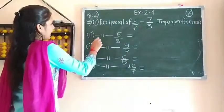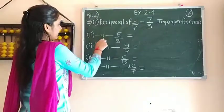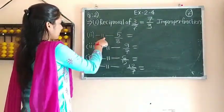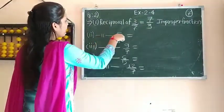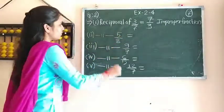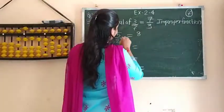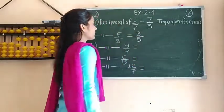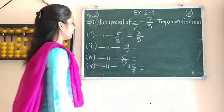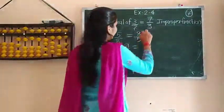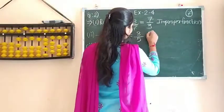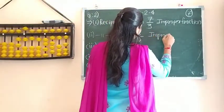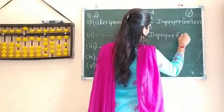Now next — the reciprocal of 5 by 8. Just as before, the numerator becomes the denominator and the denominator becomes the numerator, so it is 8 upon 5. Again, the numerator is greater than its denominator.